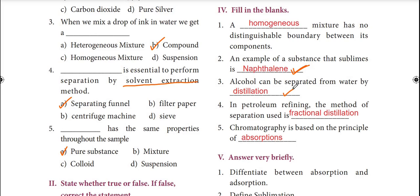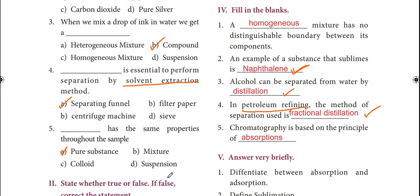Alcohol and water are separated by the distillation process. Fourth: in petroleum refining, the method of separation used is fractional distillation. Fractional distillation is used when the boiling point difference is less than 25 Kelvin. Fifth: chromatography is based on the principle of absorption.